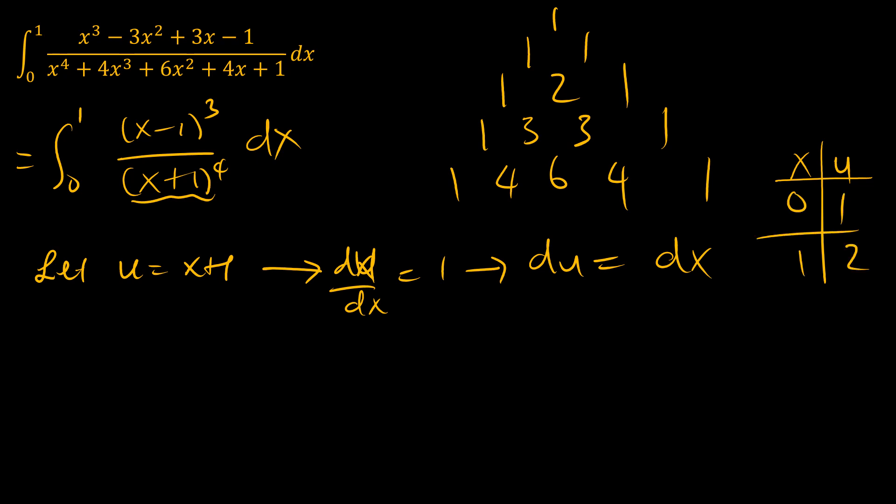So the integral from 0 to 1 of (x-1)³ over (x+1)⁴ dx can be expressed as the integral from u equals 1 to u equals 2 of... x minus 1 is the same as u minus 2, so (u-2)³ over u⁴.